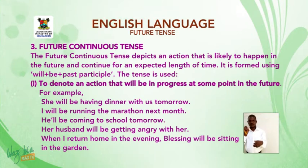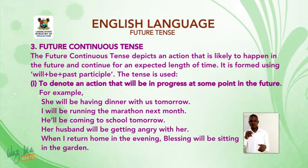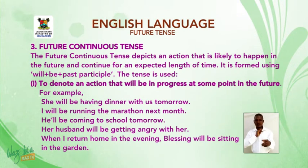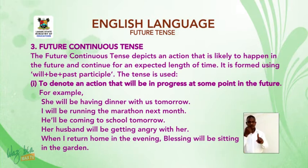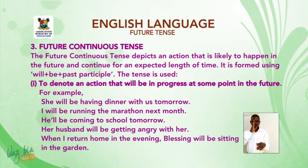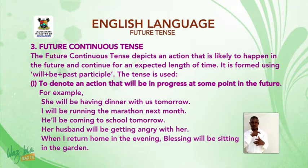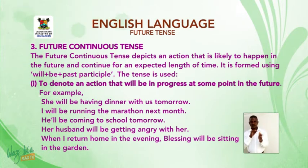Examples: She will be having dinner with us tomorrow. I will be running the marathon next month. She will be coming to school tomorrow. A husband will be getting angry with her. When I return home in the evening, Blessing will be sitting in the garden.